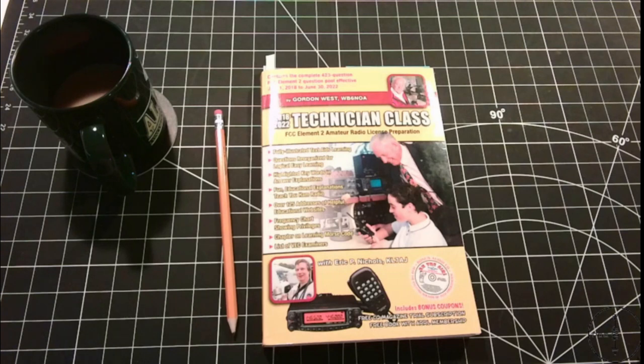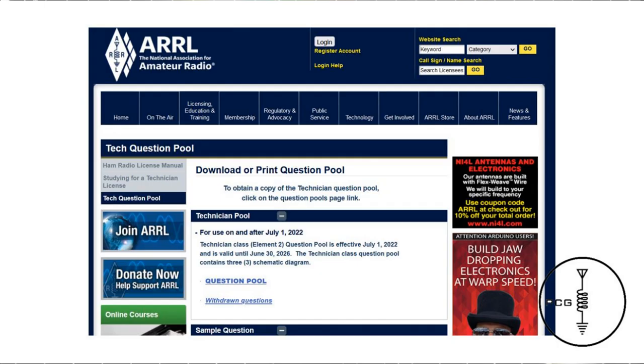If you don't want to purchase the Gordon West study guide, you can download the same question pool for free from the American Radio Relay League website, and I'll leave a link to that in the description below.